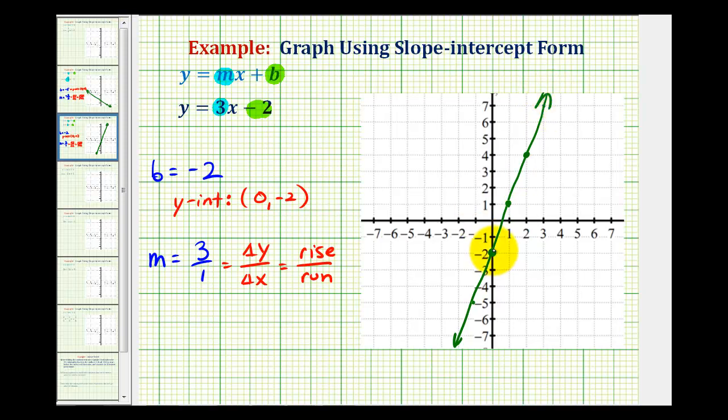Again, we have our y-intercept here. And then since the slope was 3, or 3 over 1, we went up 3 and right 1.